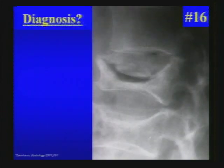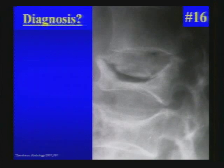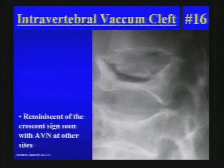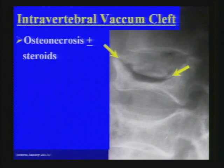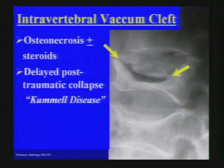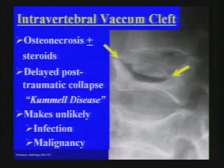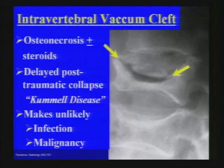Next — an intravertebral vacuum cleft within a flattened vertebral body. It is not stippled like a gas-forming infection; rather, it is an intravertebral vacuum cleft reminiscent of the crescent sign seen with AVN at the femoral and humeral heads. This is typically considered either a sign of osteonecrosis — as might be seen with steroid use — or in the setting of delayed post-traumatic collapse, termed Kümmel's disease. Importantly, when you see it, infection and malignancy are unlikely, as those conditions are associated with positive pressure. The vacuum cleft becomes more prominent on extension imaging.